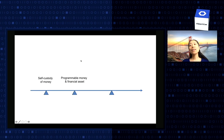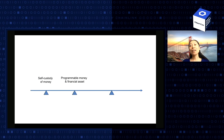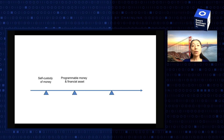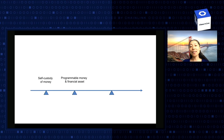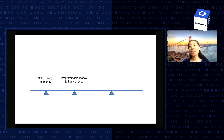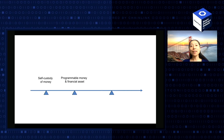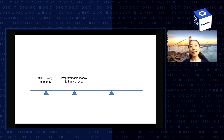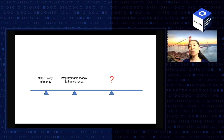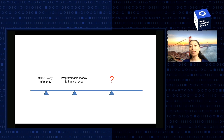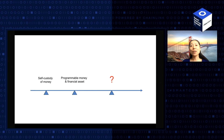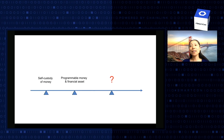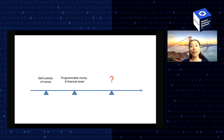As we all know, blockchain has made tremendous progress. With Bitcoin, it brought us self-custody of money, and with Ethereum, it brought us programmable money and financial assets. So the question is, what's next? What additional new capabilities and power can blockchain bring to us?